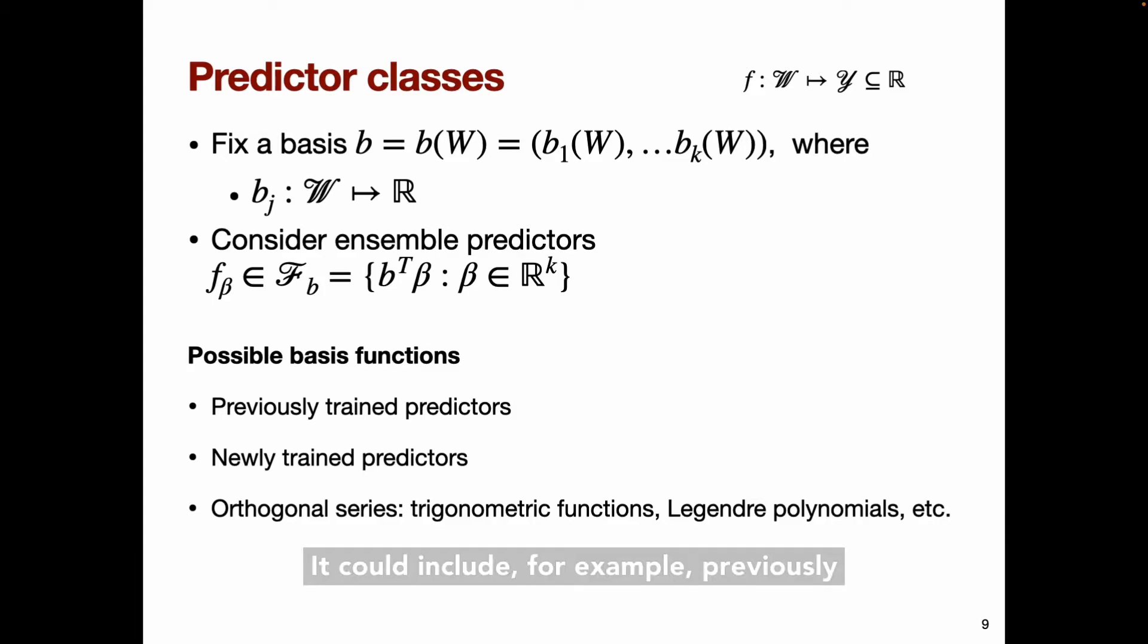There are many possibilities for constructing a basis. It could include, for example, previously trained predictors. Again, if you have any, newly trained predictors, or say a truncated orthogonal basis of some function space or any combination thereof.